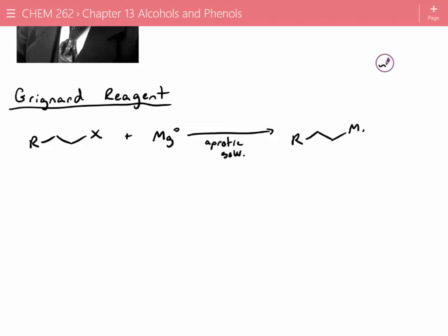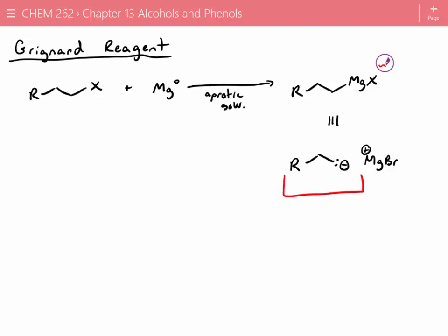So you end up with a new organometallic species where that magnesium is now just simply inserted. Now, you may be looking at the periodic table and saying, well, magnesium is all the way over on the left. Shouldn't that be an ionic bond? The reality is that it is pretty much an ionic bond. So another way of thinking of a Grignard reagent is that this carbon now has a negative charge. And you've got magnesium bromide with a positive charge. Now, this is really, really great because now we've got a carbon that's a super, super strong nucleophile. Super strong nucleophile. And I'm going to put something else in here, too. It's also a strong base.